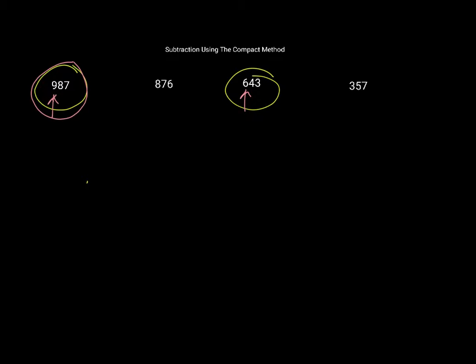So 987 subtract 643. Again, I have units, tens, hundreds. So 7 subtract 3 is 4, 80 subtract 40 is 40, and 900 subtract 600 is 300.